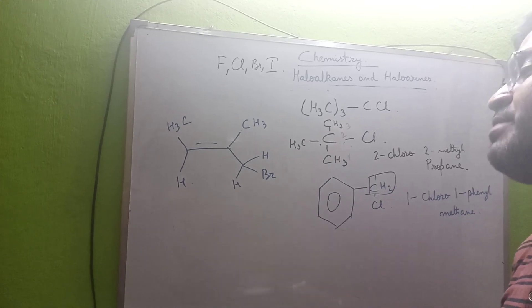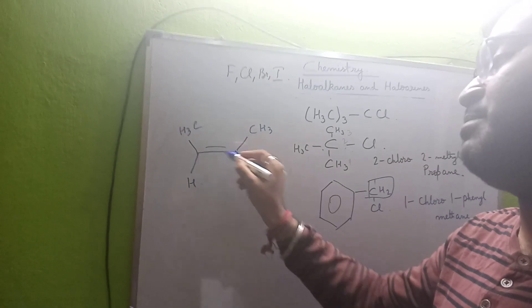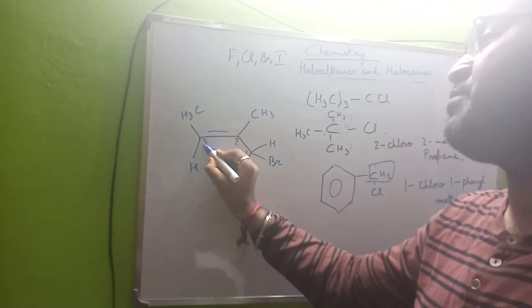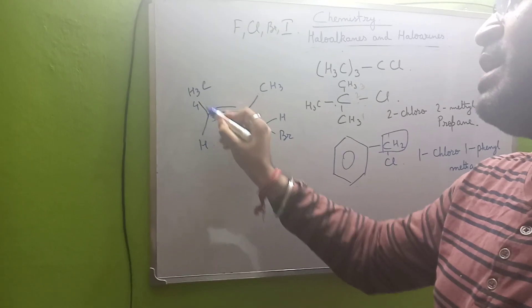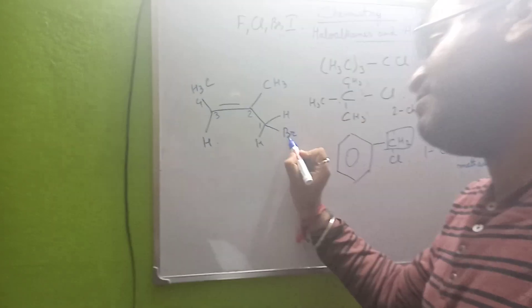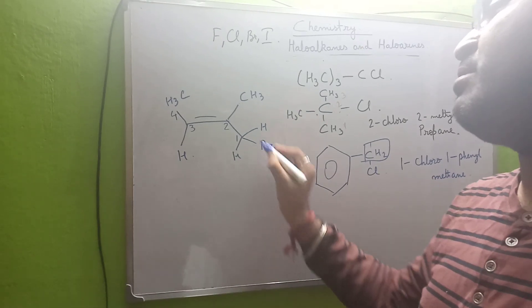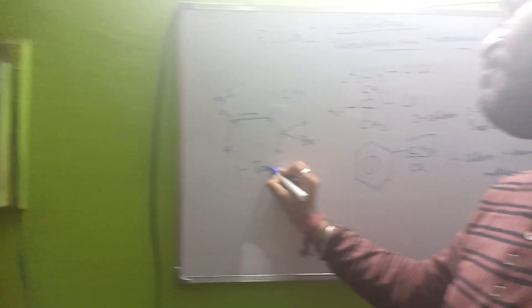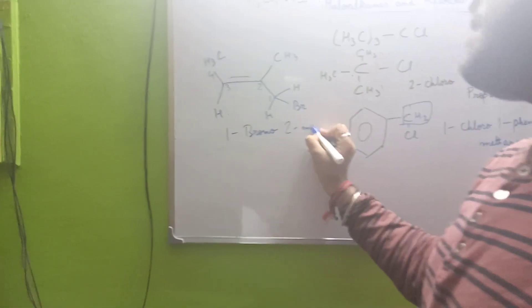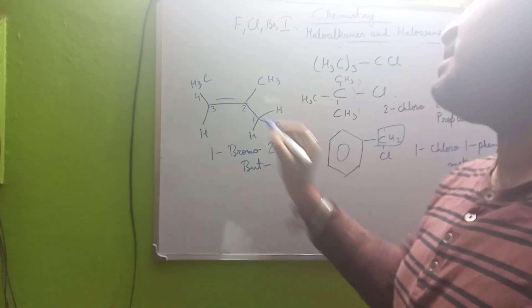For the next structure, we select the longest chain. There is a double bond present, so numbering can go one, two, three, four from this side, or one, two, three, four from the other side. Since the functional group should always get first preference, the numbering is done accordingly — it is 1-bromo, the second carbon has a methyl group so 2-methyl, and four carbons are present so we call it but-, and the second carbon has a double bond.